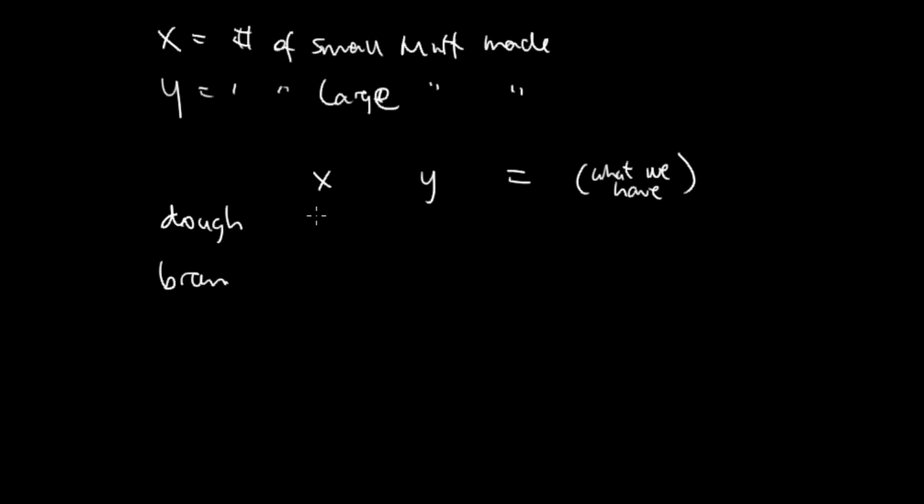So we have large muffins require 2 ounces of dough. Y is large, so large muffins require 2 ounces of dough and 2.5 ounces of bran. Small muffins require 1 ounce of dough and 1.5 ounces of bran. We have 200 ounces of dough and 260 ounces of bran.